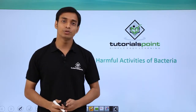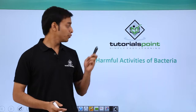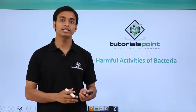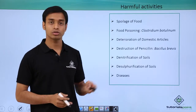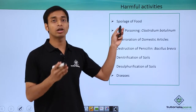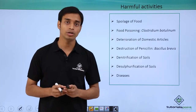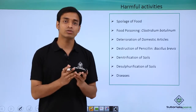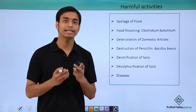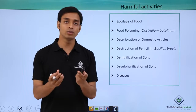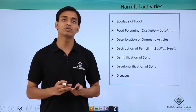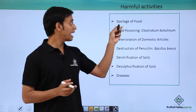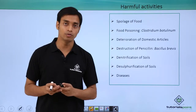Welcome to Tutorials Point. In this video we are going to talk about some of the harmful activities of the kingdom Monera, or harmful activities of bacteria. The first common harmful activity is spoilage of food. Saprophytic bacteria are responsible for the destruction or rotting of food materials, causing rotting of various carbohydrates, fruits, and all types of daily food items.